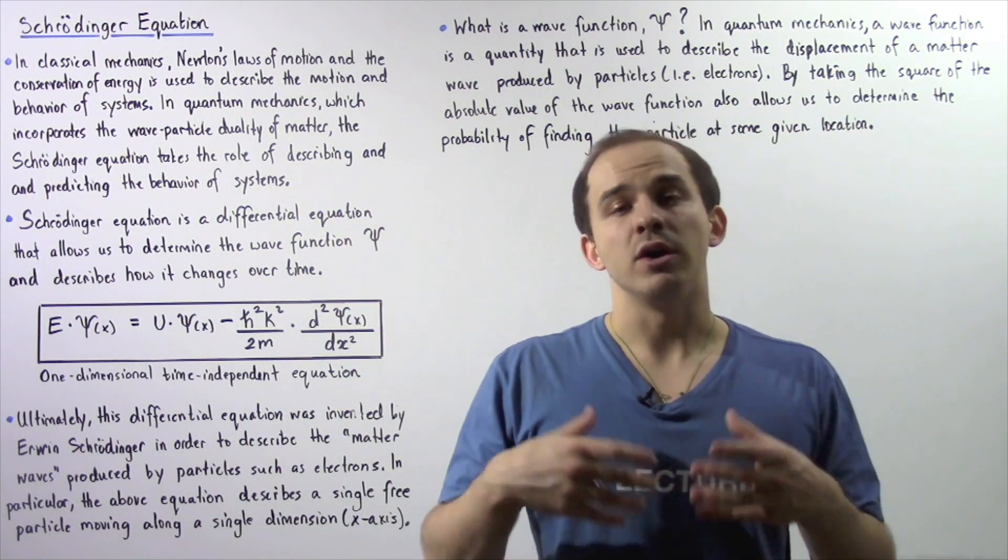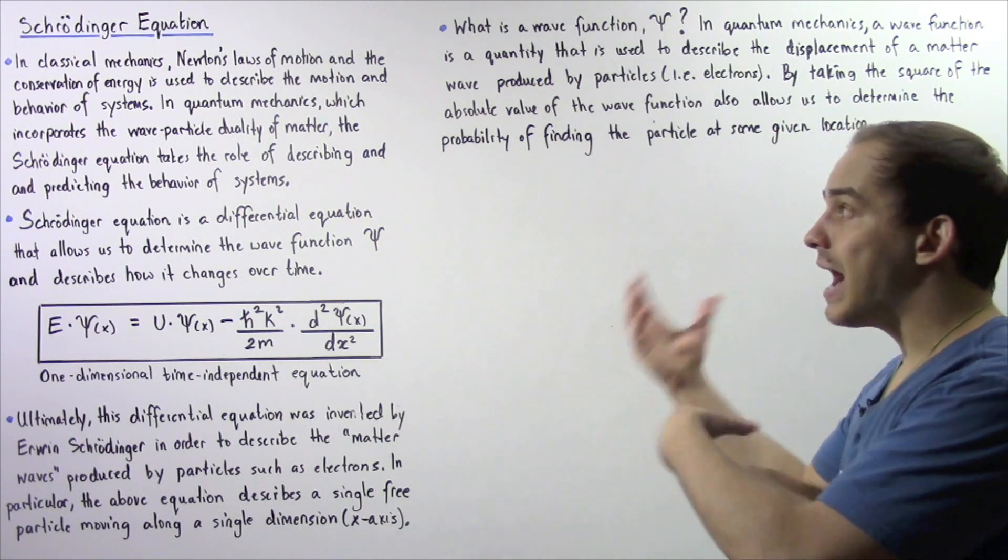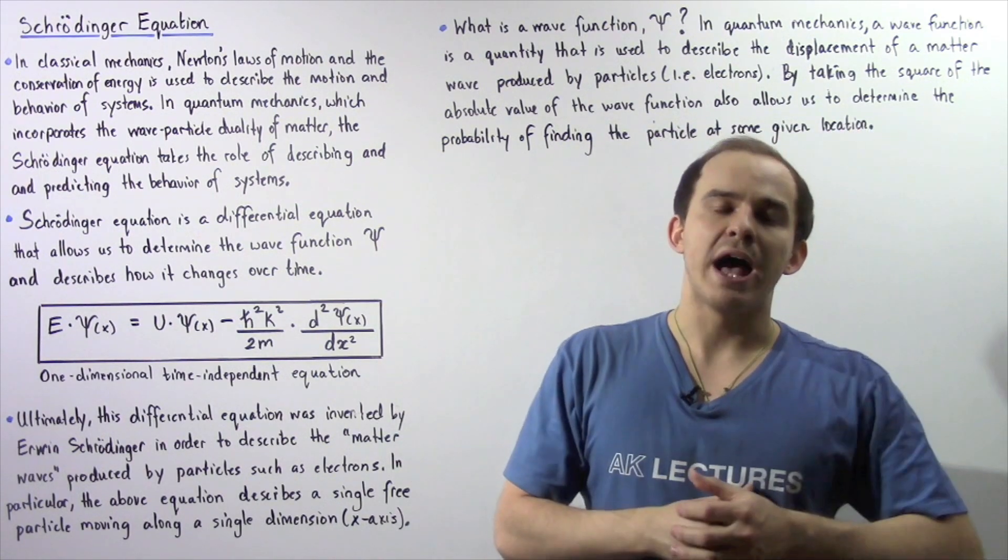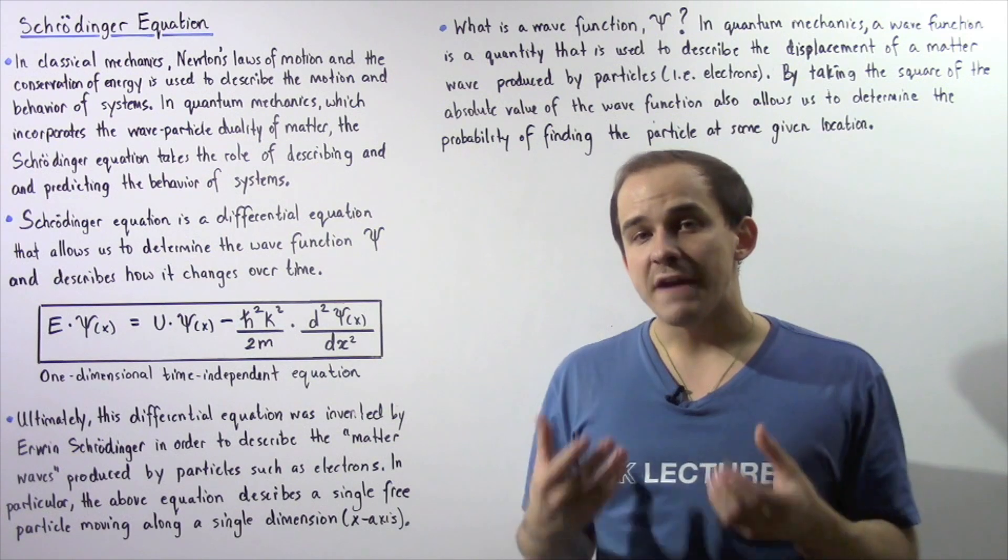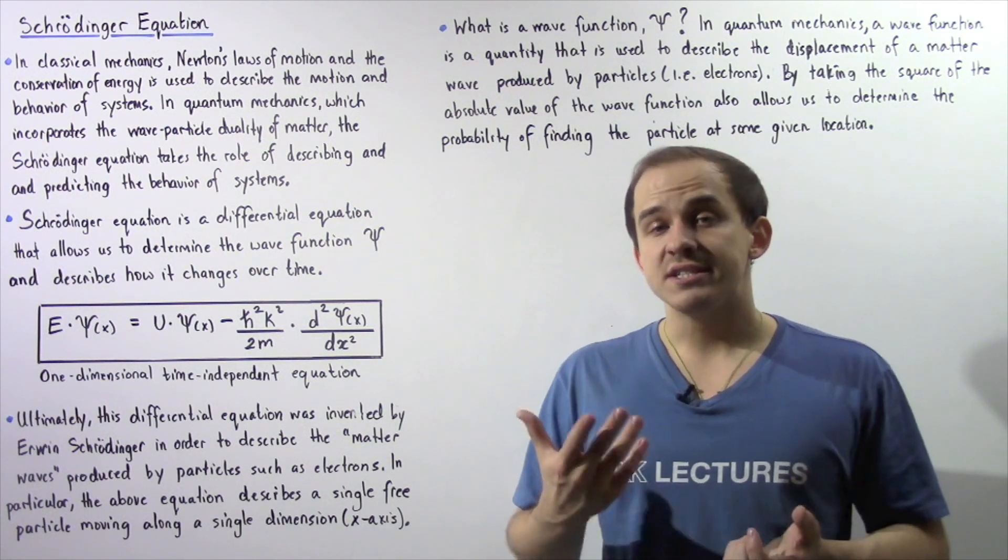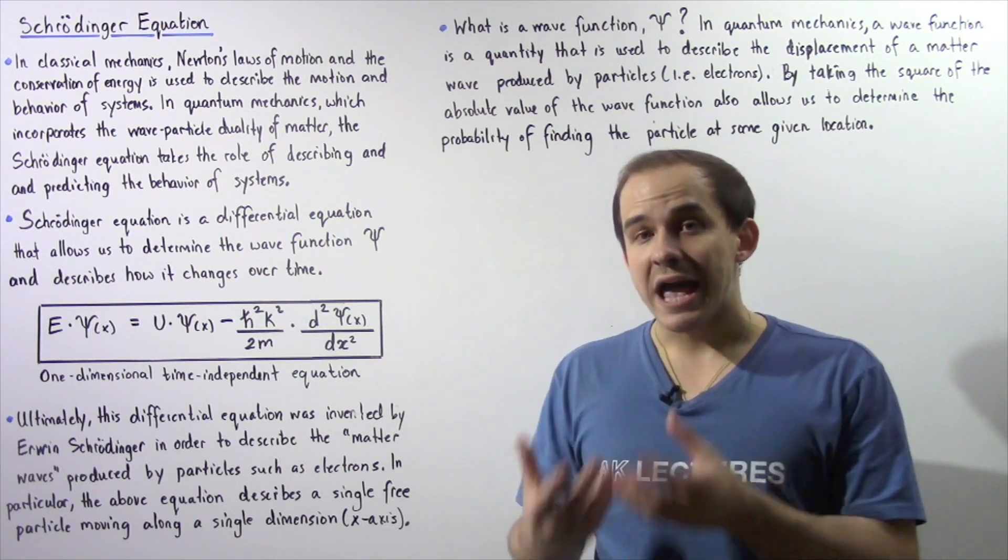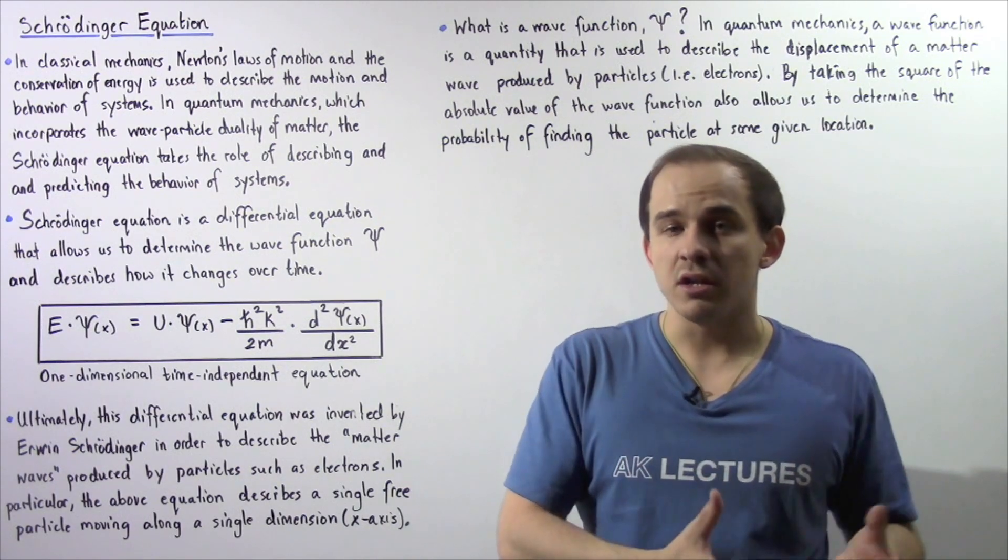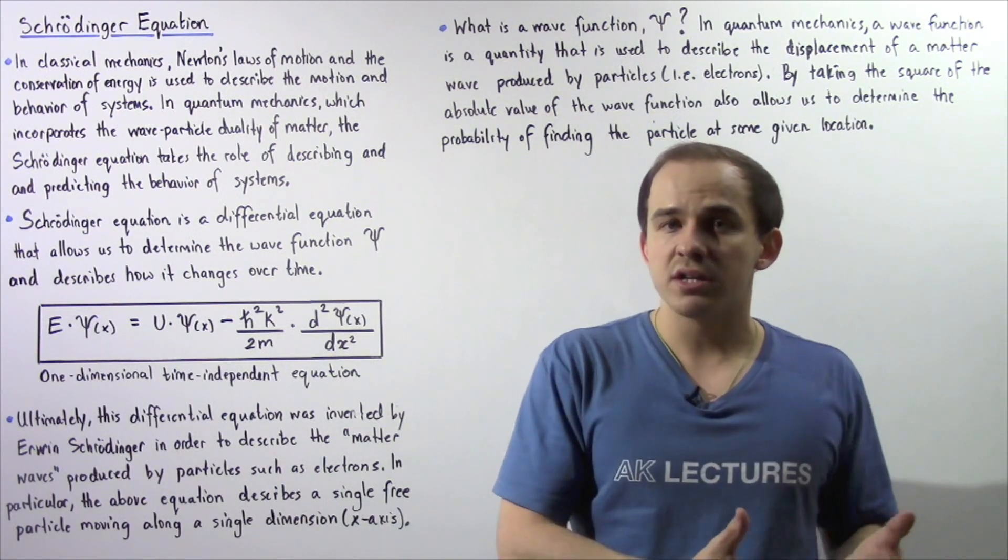For example, our electron. And this entire idea comes from wave particle duality of nature. The fact that on the atomic or subatomic level, our electron or any other particle doesn't only act as a particle, but it can also act as a wave.